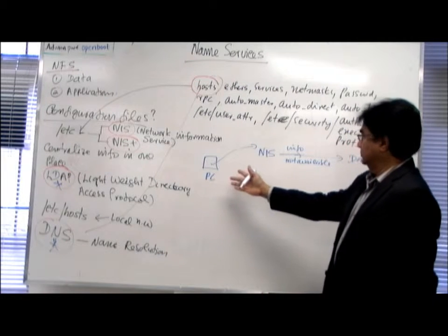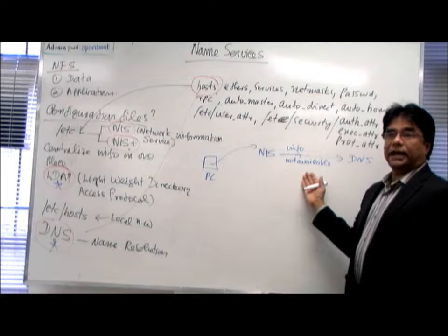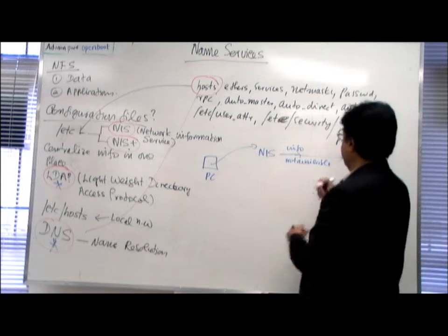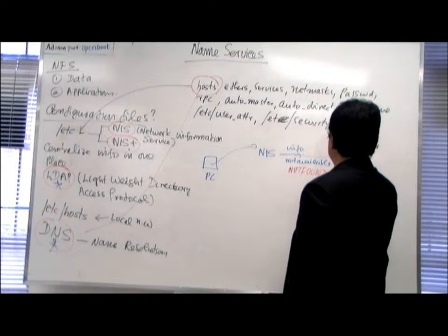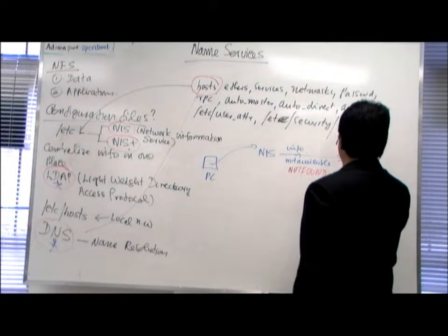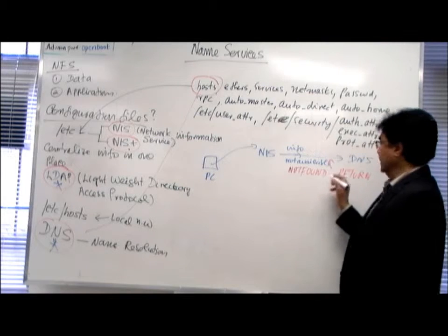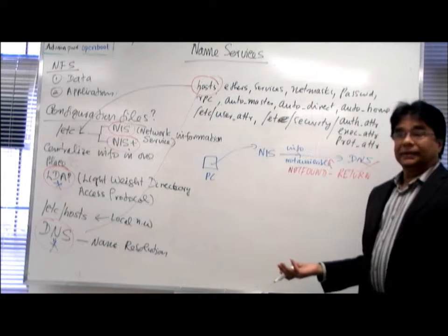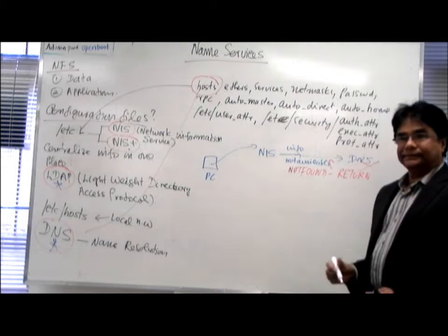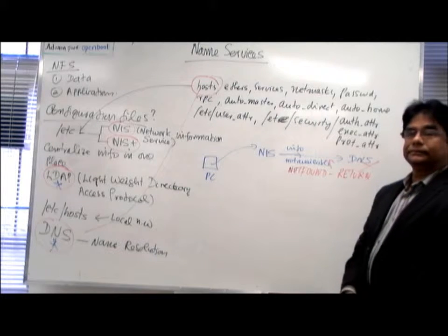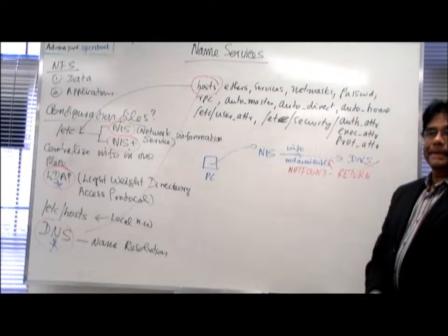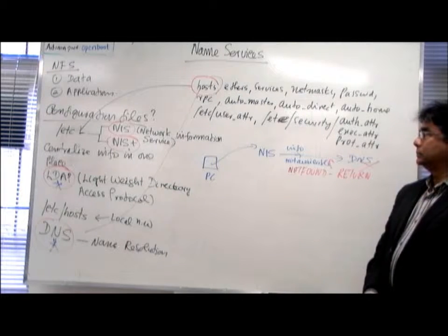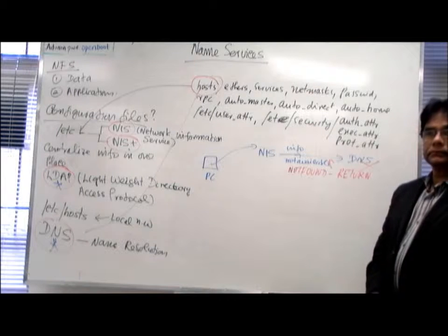So I tell my PC: go to NIS, try to get your information. If it is not there, then go to DNS. If I don't want the machine to go to DNS, then I say if it is not found, return. If I put 'return' here, then it won't go to DNS.